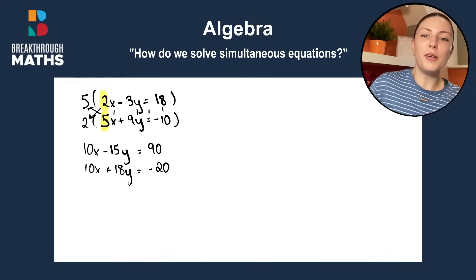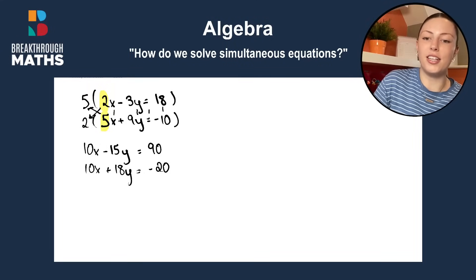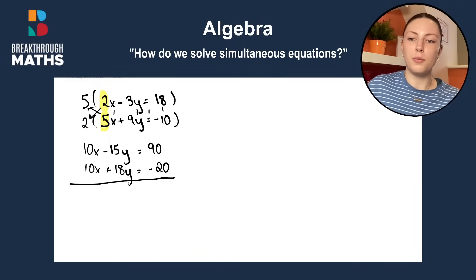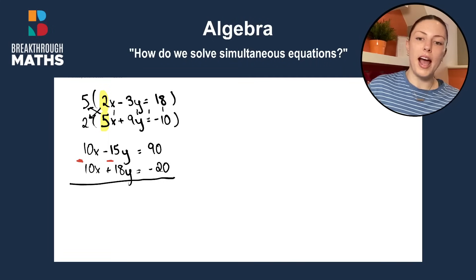Okay, great. What we do from here then is we have to change the signs of the bottom equation. So, it becomes minus 10x minus 18y and plus 20.